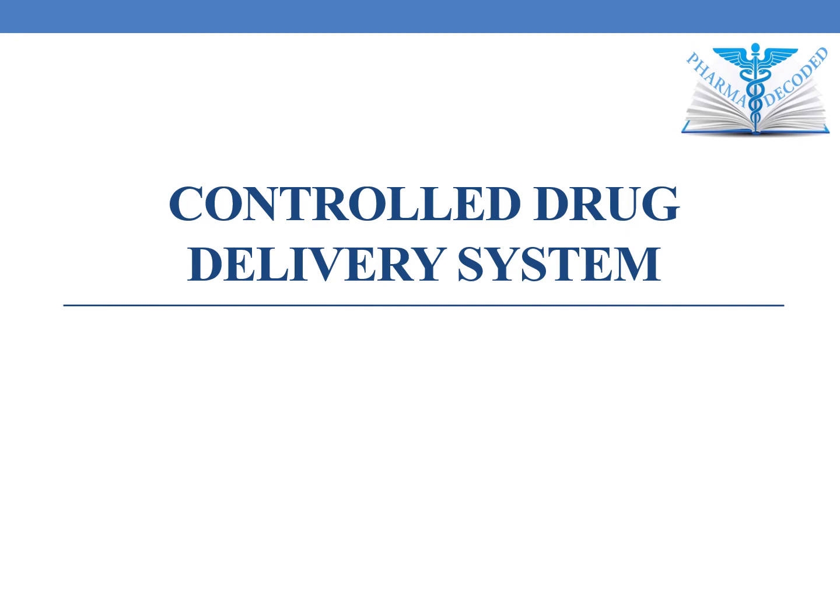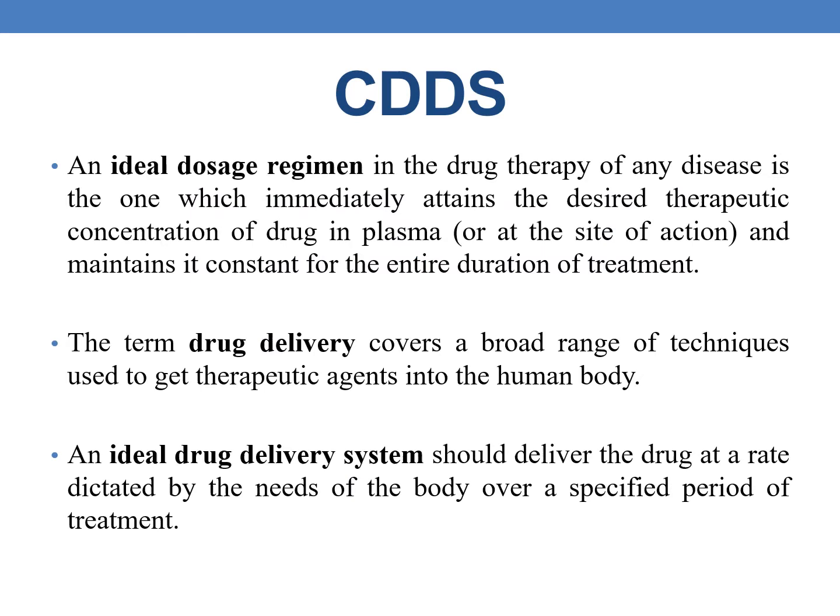Hello everyone, let us discuss about controlled drug delivery system. First of all, what is an ideal dosage regimen? An ideal dosage regimen in the drug therapy of any disease is the one which immediately attains desired therapeutic concentration of the drug in plasma or at the site of action, and maintains it constant for the entire duration of treatment.